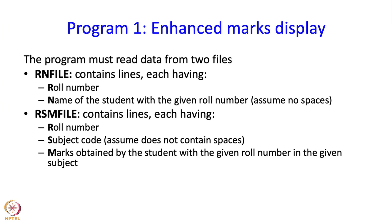Then there is another file called the RSM file. This contains lines and each of these lines will begin with a roll number, then there will be a subject code and again that subject code will not contain spaces. Following that there will be a number which will denote the marks obtained by the student whose roll number is given on that line in the subject whose code is given on the line.